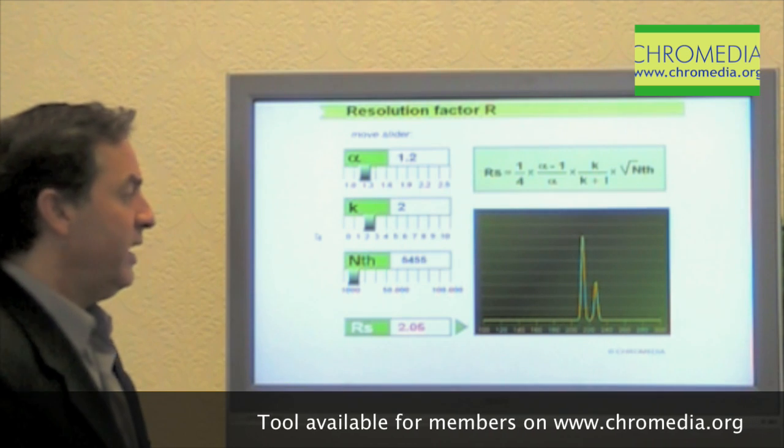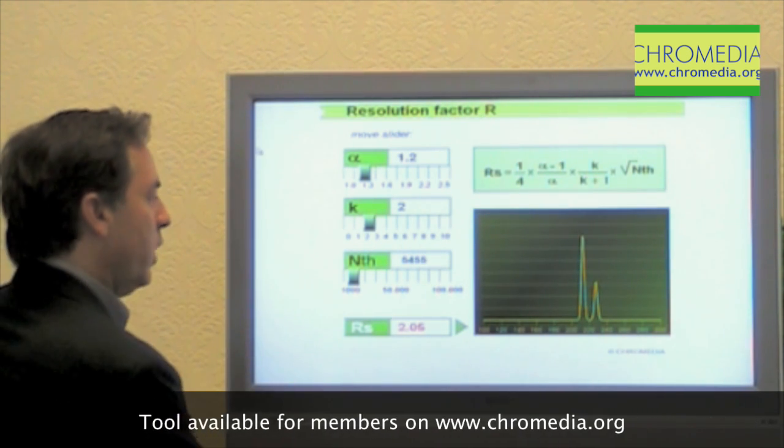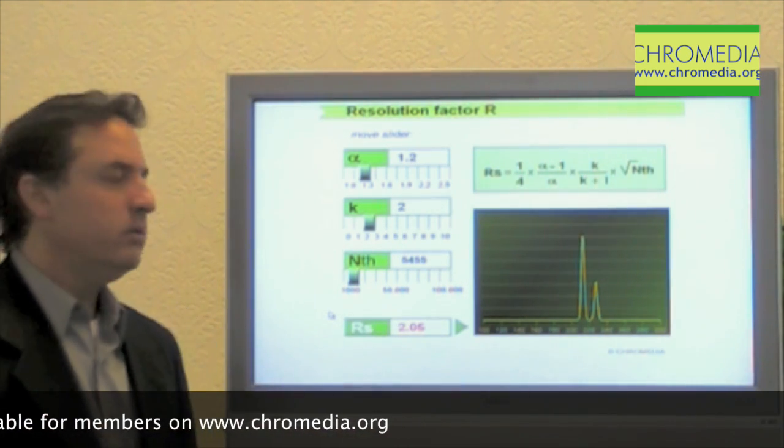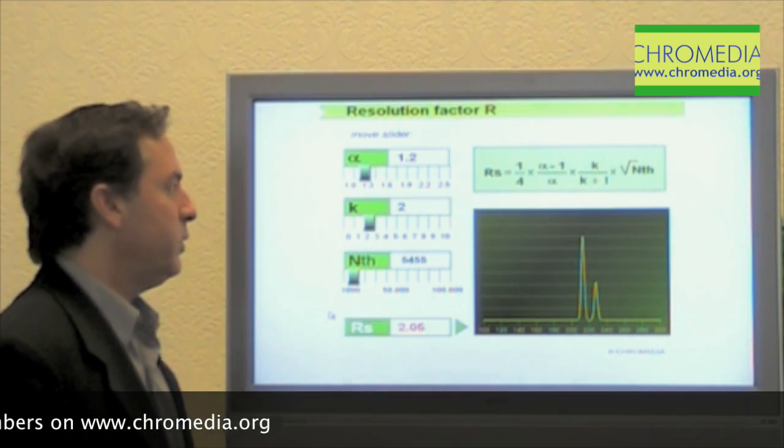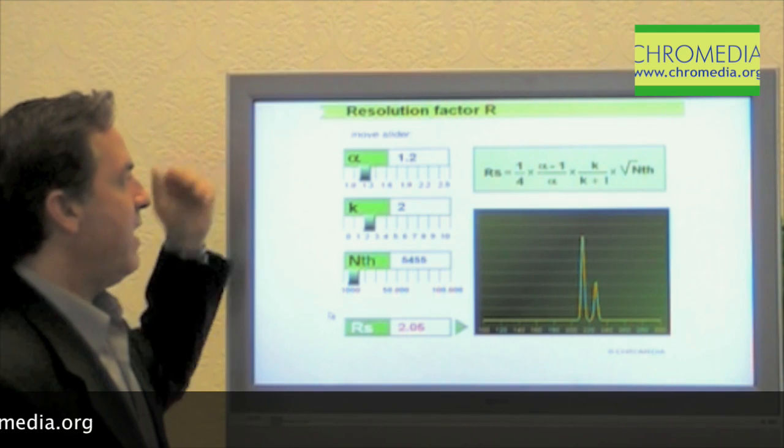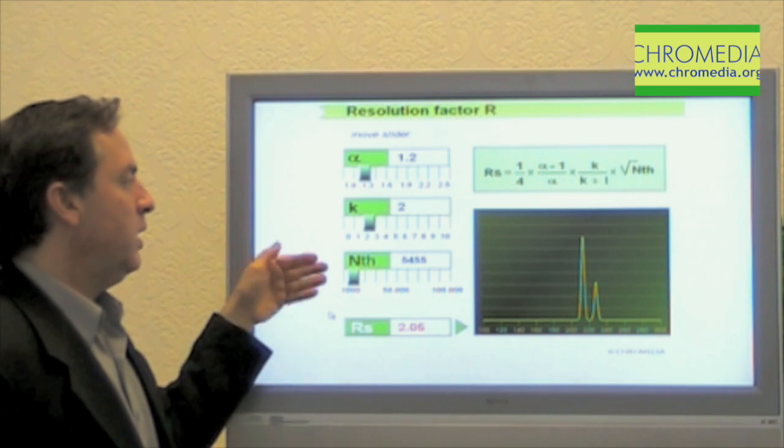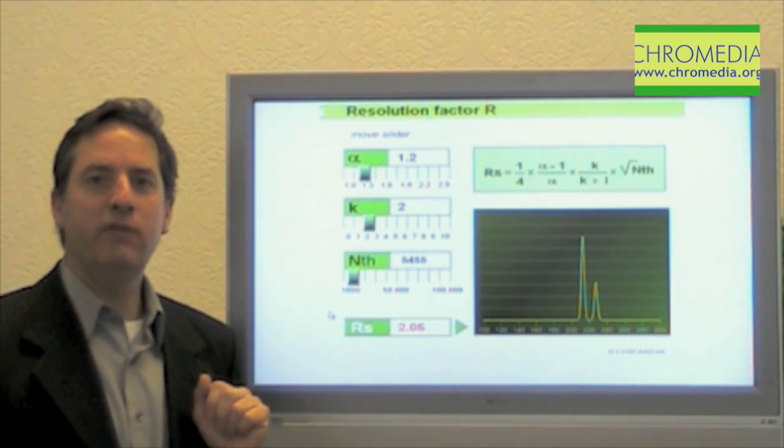Remember our goal here is to have at least 1.5. So a resolution of 2.0, we see that the peaks are separated. We see that we can actually touch the baseline between them. And I've achieved that separation by having selectivity of 1.2, capacity factor of 2, and efficiency of roughly 5,000.